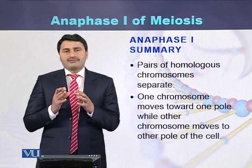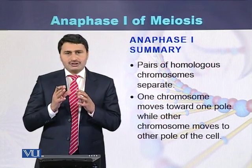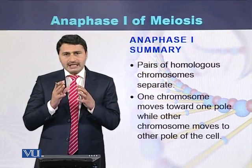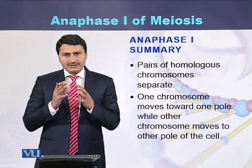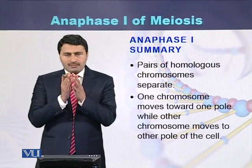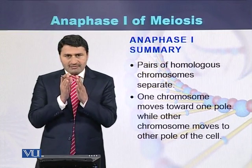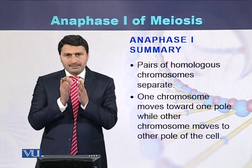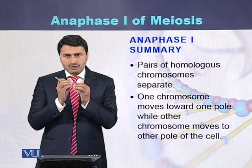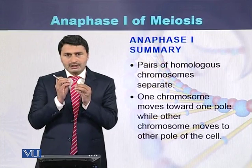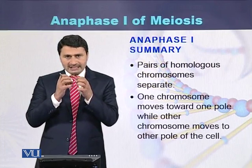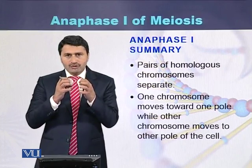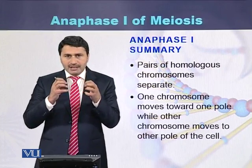Summary of anaphase of meiosis 1: In anaphase, homologous chromosomes separate from each other. The centromere does not separate. Instead, a chromosome containing two sister chromatids separates from its homolog and moves towards the poles.